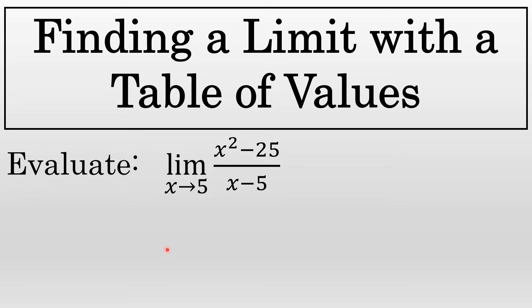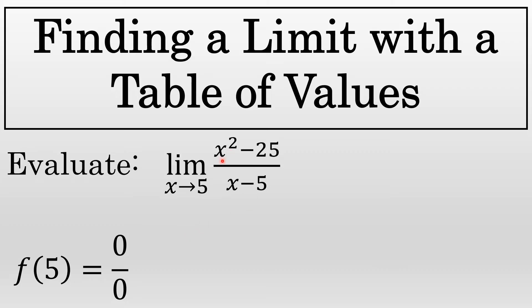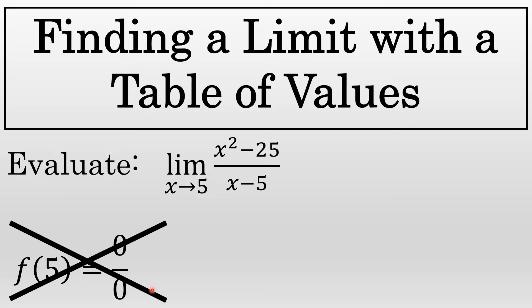In this video, I will evaluate the limit as x approaches 5 of x squared minus 25 over x minus 5. This is a somewhat interesting limit because substituting a value of 5 into this expression gives 5 squared minus 25, which is 0, and 5 minus 5, which is also 0. So f of 5 is 0 over 0. That doesn't really tell you anything about what the limit is. This is called the indeterminate form 0 over 0.